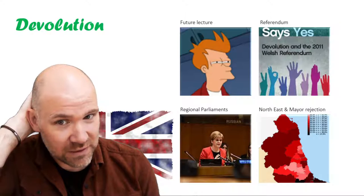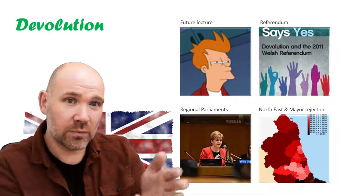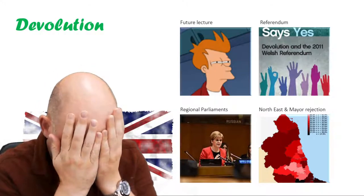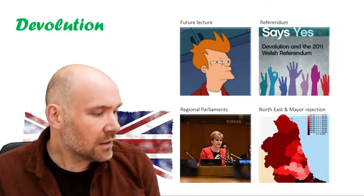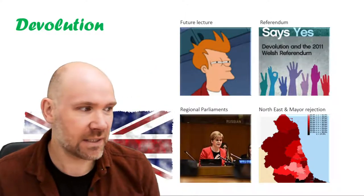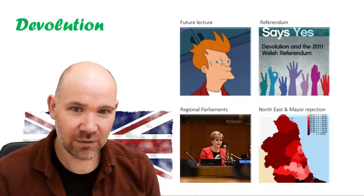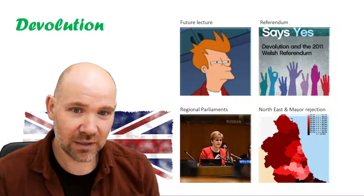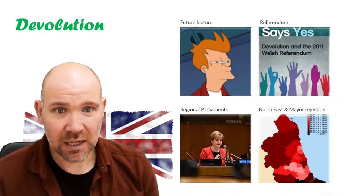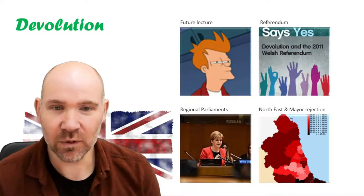They attempted to have more devolution in the northeast, but there was a referendum rejection. The northeast said no to a regional parliament, so instead they went down more of a local mayor route. As part of devolution, we also have the London mayor — Boris Johnson was there, and we've also got mayors in Liverpool and Manchester. Devolution is not just parliaments but also these local representatives. We now have different laws in different places — COVID was dealt with very differently in different parts of the UK — and it's changed the parties that are successful in different regions.